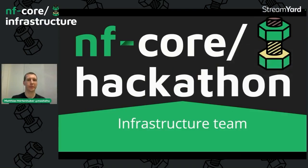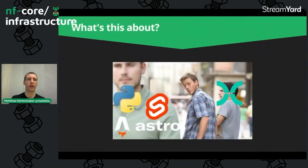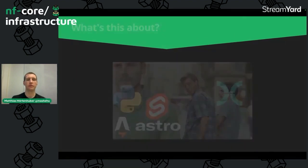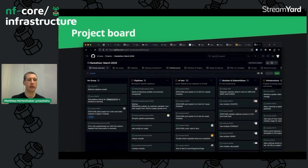So what's this one about? Well, we all love writing Nextflow, be it for pipelines, modules, sub-workflows, whatever. But what if we could instead spend the nf-core hackathon writing some Python or some fresh new Astro and Svelte components? That's what's happening in the infrastructure group, where we work on the nf-core tools repository and the nf-core website repository.